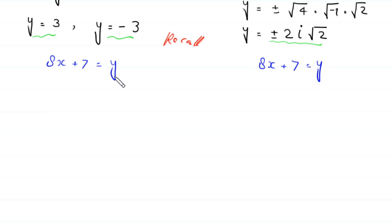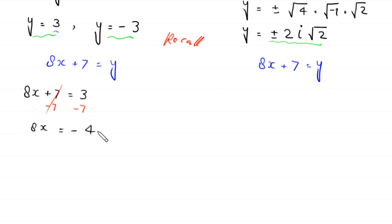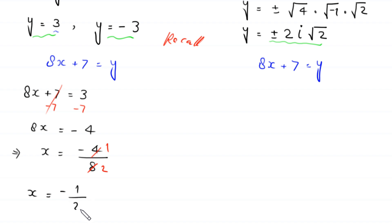When y=3: 8x+7=3, subtract 7 from both sides to get 8x=−4, divide by 8 to get x=−4/8=−1/2. When y=−3: 8x+7=−3, subtract 7 to get 8x=−10, divide by 8 to get x=−10/8=−5/2.